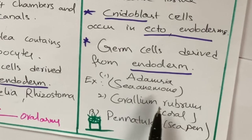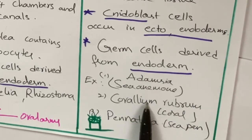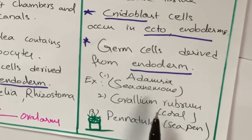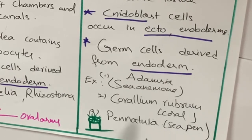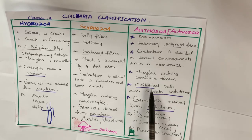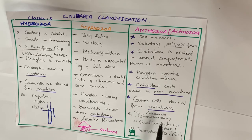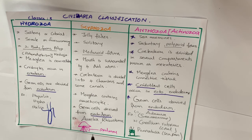Examples for Anthozoa are Adamsia, commonly known as sea anemone, and Corallium rubrum, from which precious coral is obtained. Another example is Pennatula, known as a sea pen because it looks like a pen. The Anthozoa characters are important for four marks in your board examination. I hope you enjoyed the video — happy studying!